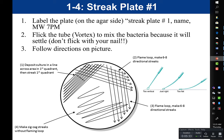When we're ready to do our streak plate, we turn it over so that the agar side is down, because we have to do our streaking on the agar. If we streak the lid, nothing's going to grow. So right before we start, we turn the plate over with the agar side down.